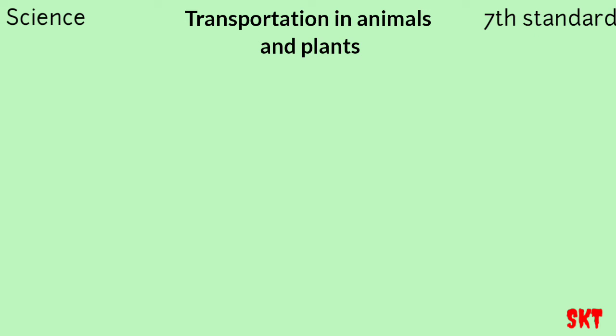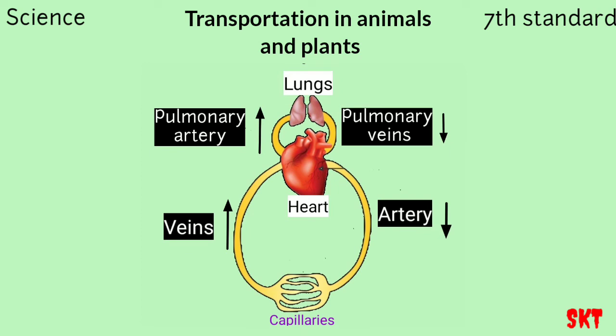In the last segment we studied the flow of oxygenated and deoxygenated blood, and our heart plays a major role. From the lungs it takes oxygenated blood through pulmonary veins and pumps it to all parts of our body through arteries. It receives deoxygenated blood from all parts of our body through veins and gives it to the lungs through the pulmonary artery. Now let us study the human heart — its structure and how it works.